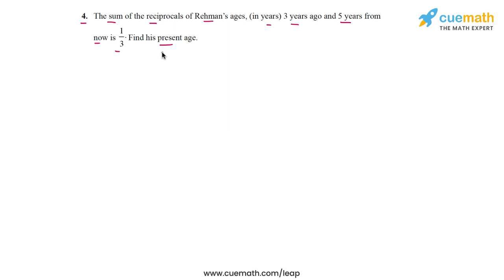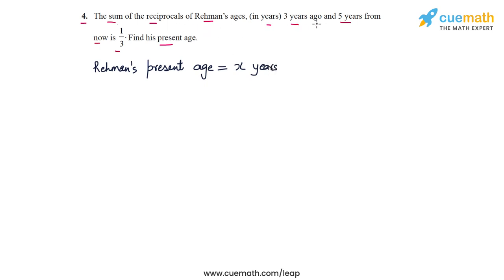The unknown in this case is Rehman's present age. Let's assume his present age is x years. We are told that the sum of the reciprocals of his age 3 years ago and 5 years from now is 1/3. Rehman's age 3 years ago will be x - 3 years, since his present age is x.